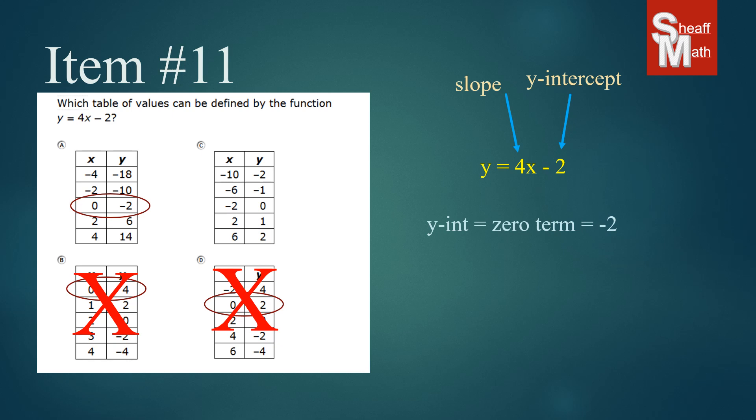Now what I'm going to do is look at the slope of A and see if we can determine if that's the one. So we know our slope is 4, meaning it goes up 4 over 1, right?